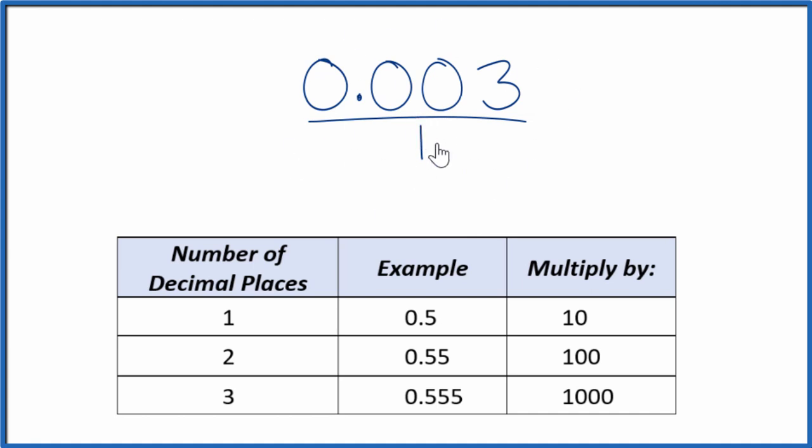What we want to do next is get this to be a whole number. So I have one, two, three decimal places. With three decimal places, I'm going to multiply the numerator here by 1,000.